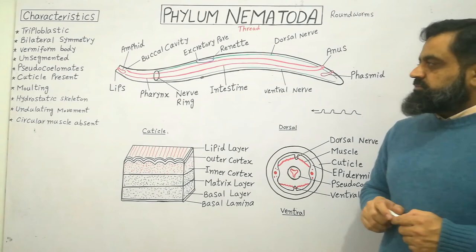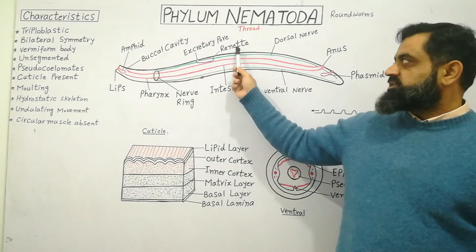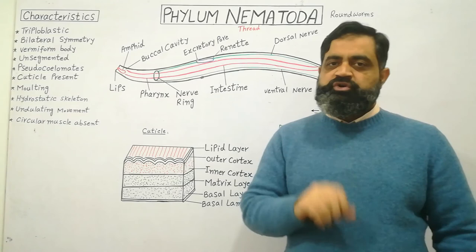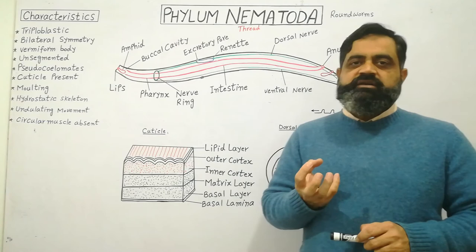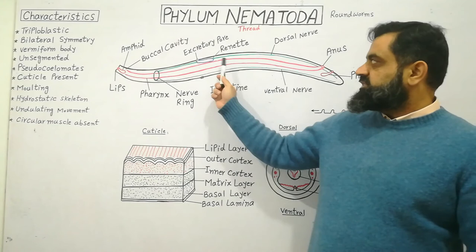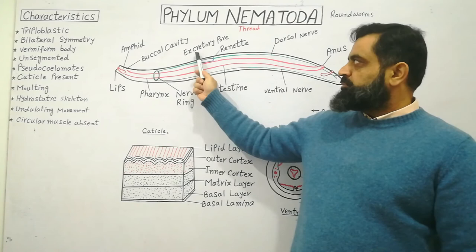The excretory system is composed of specialized cells known as renette cells, present in the pseudocoelom. Nitrogenous waste material such as ammonia and other compounds are present in the pseudocoelomic fluid. These cells filter the waste material from the fluid and export it outside the body through a pore known as the excretory pore.